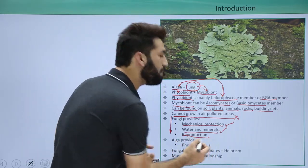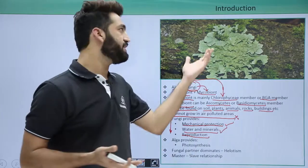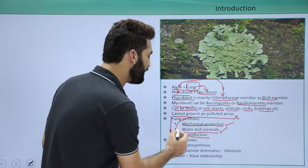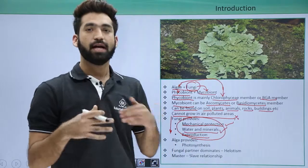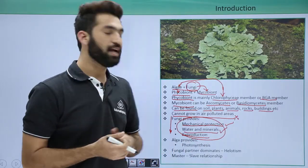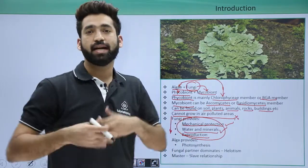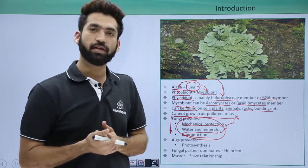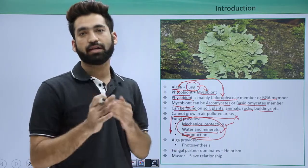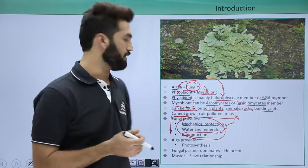Apart from that, the reproduction in lichen is basically because of the fungus. So fungus is providing these three important roles. It is providing the shelter to the algae. After that, it is providing the enhanced supply of water and nutrients to the algae. And apart from that, the reproduction in lichen is mainly because of the presence of fungus.